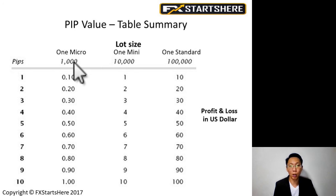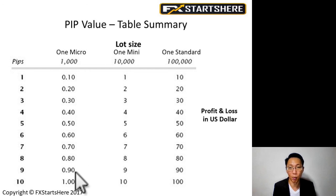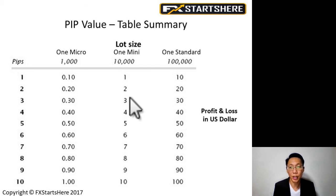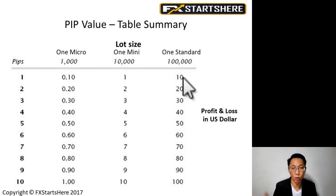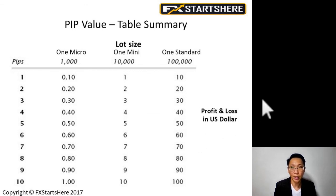If you're trading one micro lot, one PIP is worth 10 cents, so 2 PIPs is 20 cents and 10 PIPs is one dollar. With one mini lot, one PIP equals one dollar — so 3 PIPs is three dollars, 5 PIPs is five dollars. If you're trading five mini lots and the price moves one PIP, you've made or lost five dollars. For one standard lot, each PIP is worth ten dollars — so if price moves six PIPs in your favor, you've made sixty dollars on that trade.